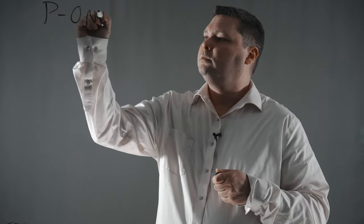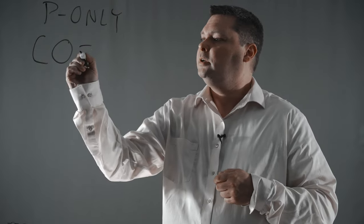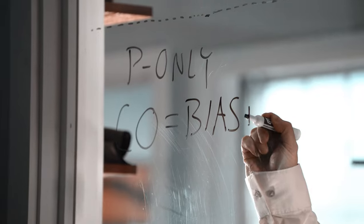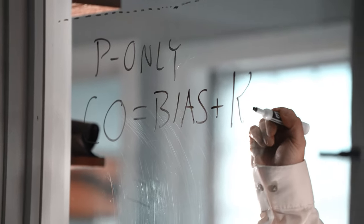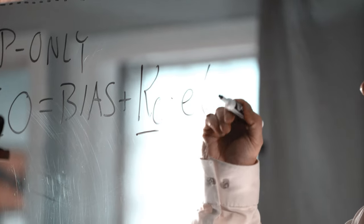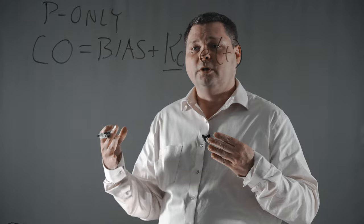So a P-only controller is the controller output is equal to some bias value, which is a starting value of your controller, plus your controller gain value, in this case it's Kc, times whatever your error is. This is the equation for a P-only controller.